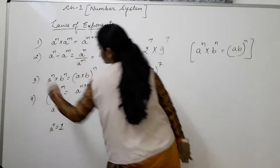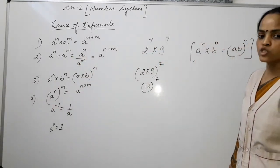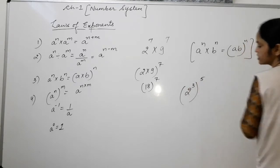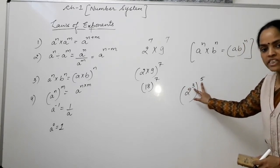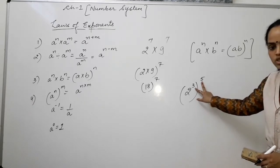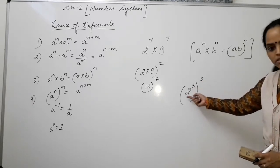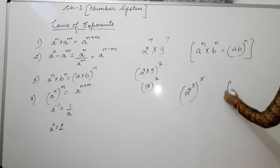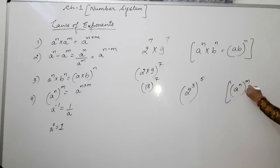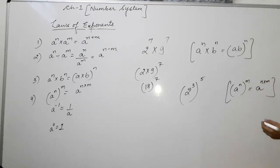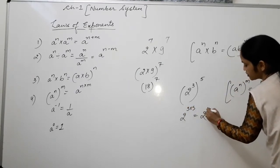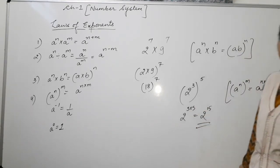According to the fourth law: a to the power n, whole raised to the power m — powers will be multiplied. For example, 2 to the power 3 whole raised to the power 5. We apply: (a^n)^m = a to the power n multiplied by m. So we get 2 raised to the power 3 × 5, which equals 2 raised to the power 15.